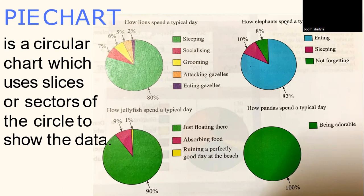Example here, we have an example of how lions spent a typical day. Example number 1, as you know, the total of the pie chart is 100%. In this diagram, how to interpret it is, the lion spent about 80% sleeping, 7% socializing, 6% grooming, 5% attacking gazelles, and the purple-colored 2% is eating gazelles.